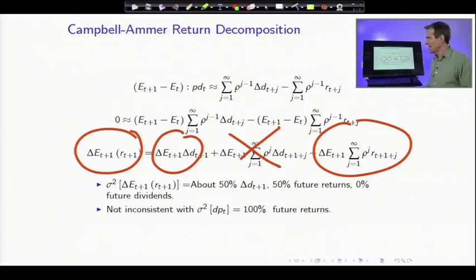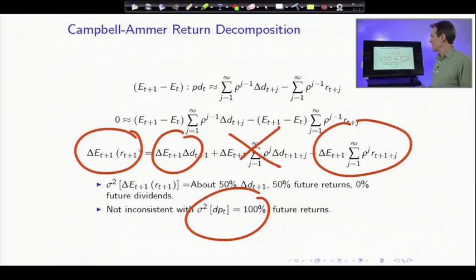Now that seems inconsistent. Wait a minute. We just said that the variance of dividend yields is 100% future returns. What's this 50-50 thing? Well, what you're seeing is the effect of current dividend growth. So these two things are completely consistent, but people get confused all the time. The volatility of returns is about half that period's dividend growth and half valuation, half discount rates. The volatility of dividend yields is 100% expected future returns because when dividends go up, prices go up at the same time.